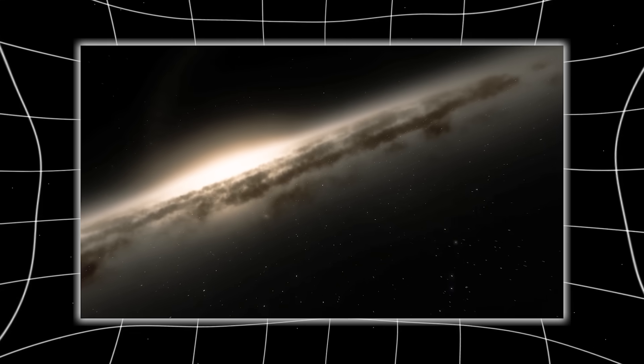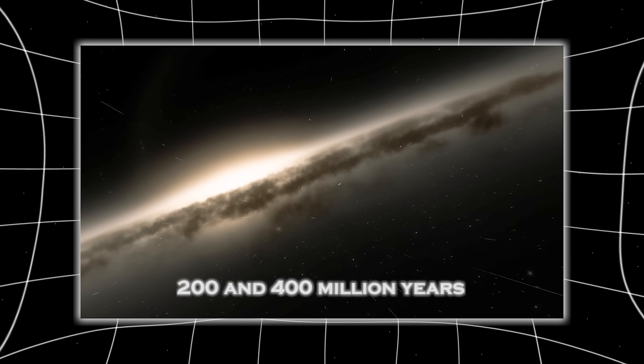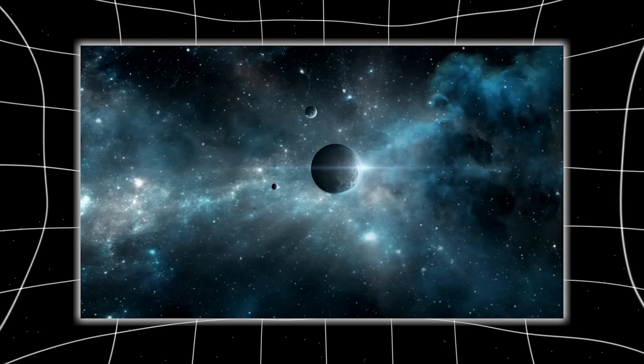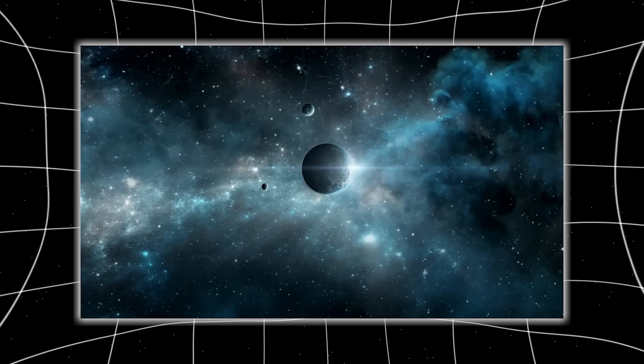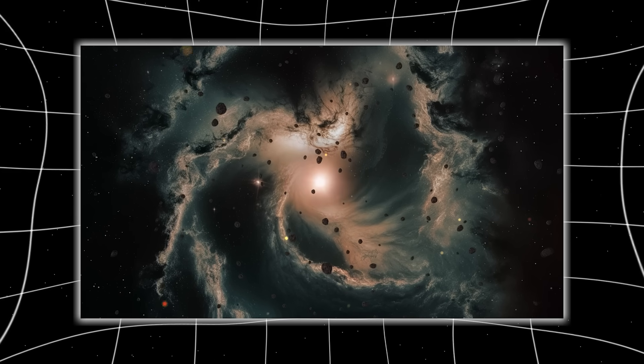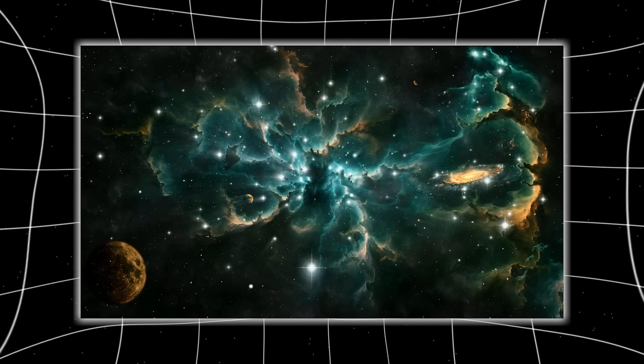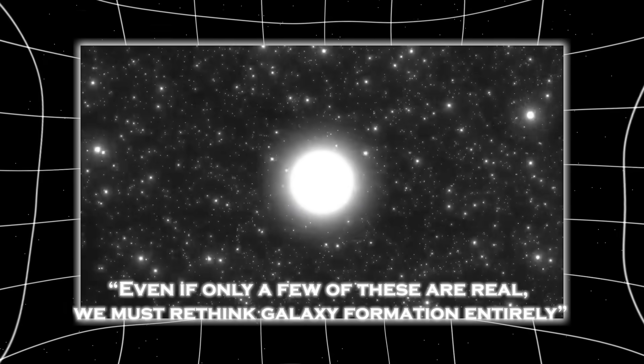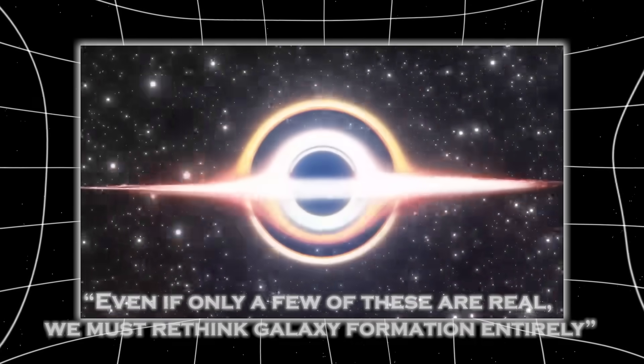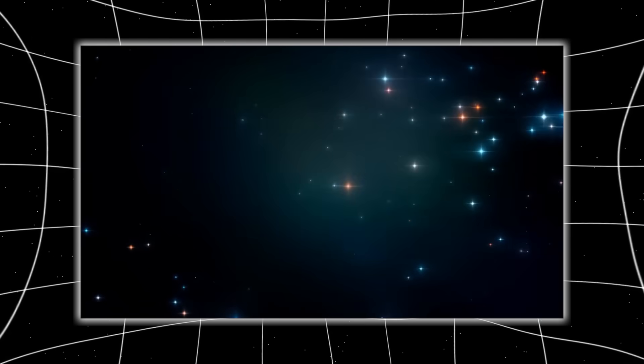A recent study found 87 potential galaxies formed between 200 and 400 million years after the Big Bang, a number so absurdly high that it directly contradicts the Lambda-CDM model, the foundation of modern cosmology. One of the study's authors admitted openly, even if only a few of these are real, we must rethink galaxy formation entirely.